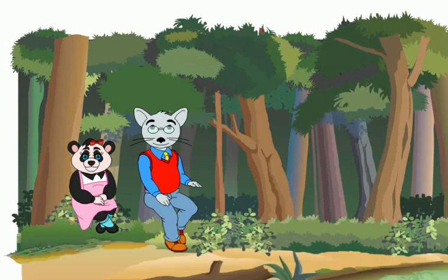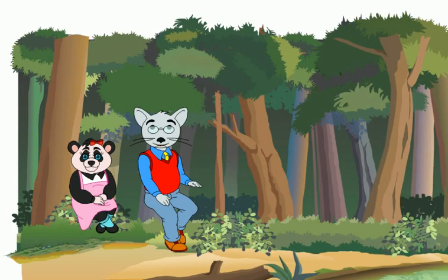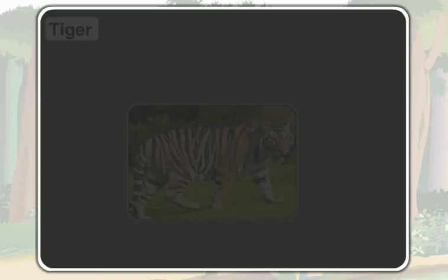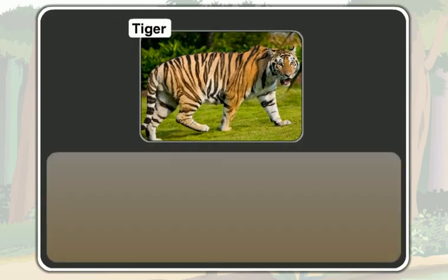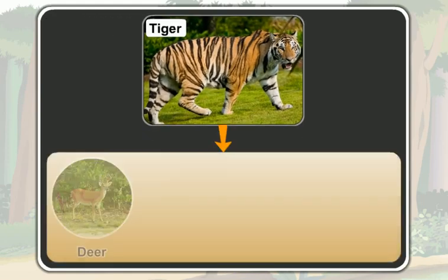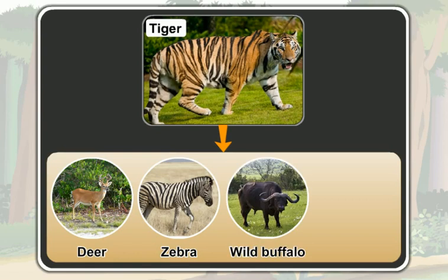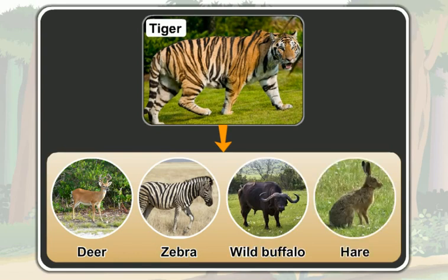Students, you know that a tiger is a flesh-eating animal. A tiger kills animals like deer, zebra, wild buffalo, and hare and eats their flesh.